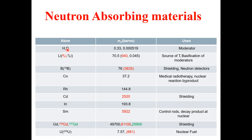First, we have hydrogen and its isotope deuterium. The cross-section for hydrogen is 0.33 barn, and for deuterium it is 0.000519 barn. The main use of hydrogen and deuterium is as a moderator in nuclear reactions.